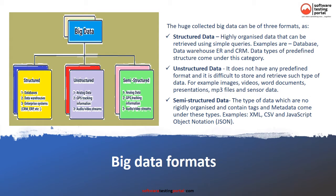The huge collected big data can be of three formats. First, structured data: highly organized data that can be retrieved using simple queries — examples include database, data warehouse, and CRM. Second, unstructured data: it does not have any predefined format and it is difficult to store and retrieve — examples include images, videos, and word documents. Third, semi-structured data: data which is not rigidly organized and contains tags and metadata — examples include XML, CSV, and JSON.